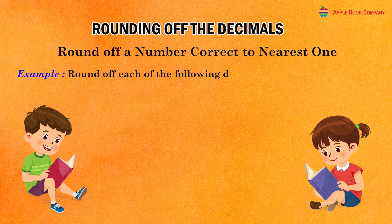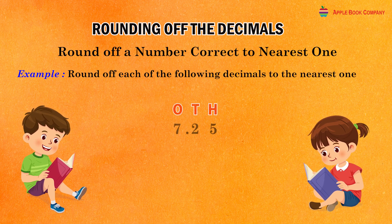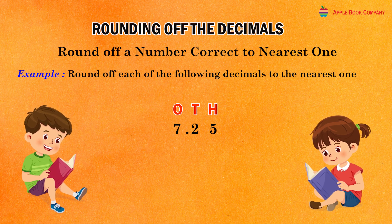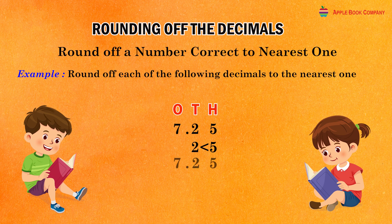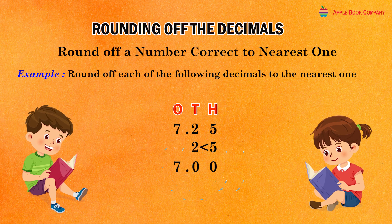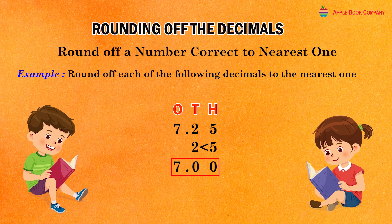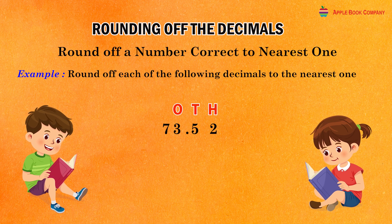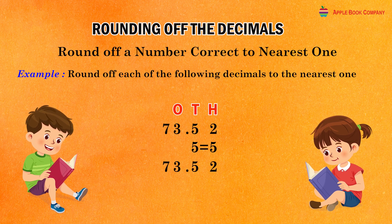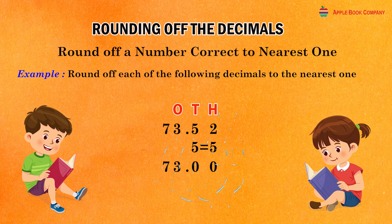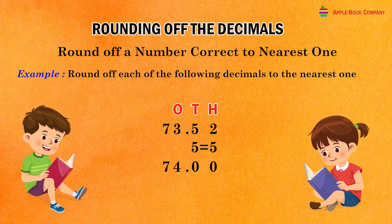Round off each of the following decimals to the nearest one. The given decimal is 7.25. Here, the digit at the first decimal place is 2 which is less than 5. So, replace each digit after the decimal point by zero and keep all the digits before the decimal point as they are. Rounded number: 7.00. The given decimal is 73.52. Here, the digit at the first decimal place is 5. So, replace each digit after the decimal point by zero and increase the digit at the ones place by one. Rounded number: 74.00.